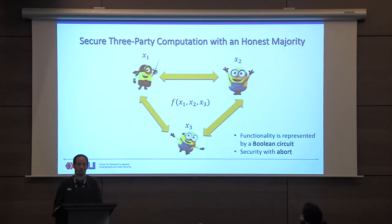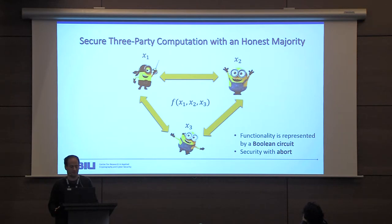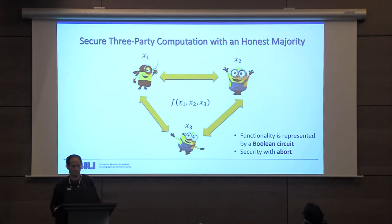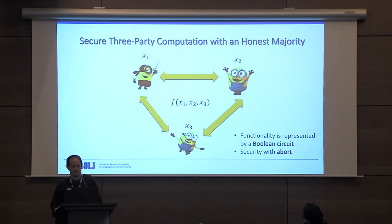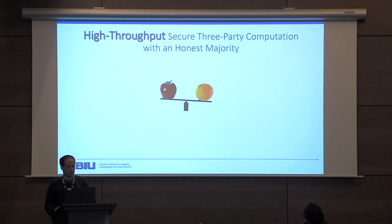We assume the functionality is represented by a boolean circuit, and we consider security with abort, meaning we achieve privacy and correctness but do not guarantee fairness or that there will be an output. The only guarantee is that if the parties did not abort during the computation, then the output is correct.